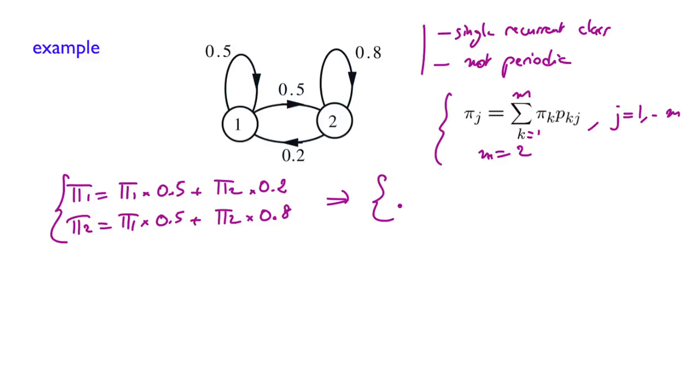Let's rewrite them. I'm going to pass this one on this side and this one on this side. So we get pi 1 times 1 minus 0.5 is 0.5 equals pi 2 times 0.2. And this one, pi 2 times 1 minus 0.8 is 0.2 equals pi 1 times 0.5. We realize that these two happen to be the same.